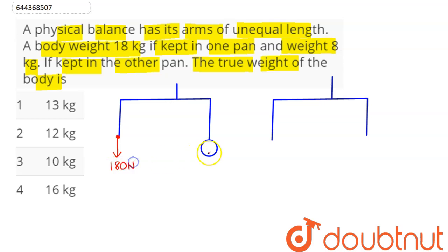by 180 newton force, which is its weight W. Whereas if kept on the other side, the same body weighs 8 kg. That is, we have here the force as 80 newton. So this length here is l1, this length is l2. Similarly, this is l1 and l2.